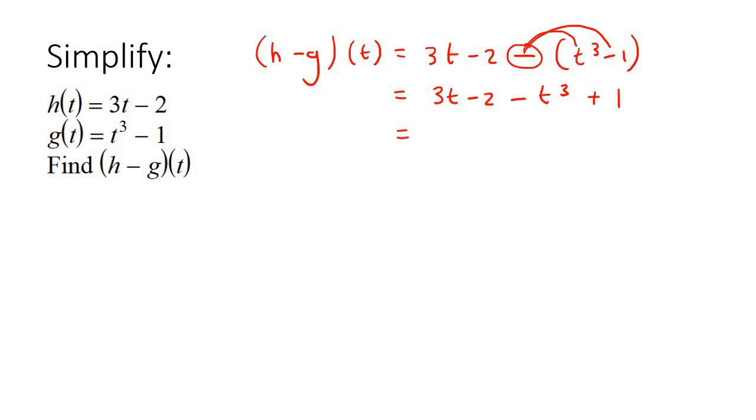And so that's going to give us, now we just simplify. So 3t minus 1, because minus 2 plus 1 is minus 1, minus t cubed. And there we go. That's the answer.